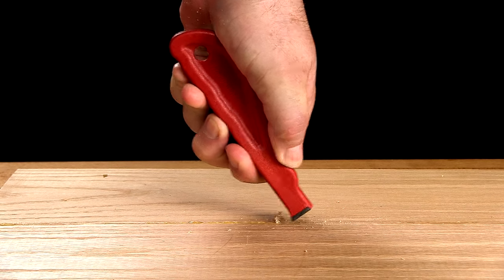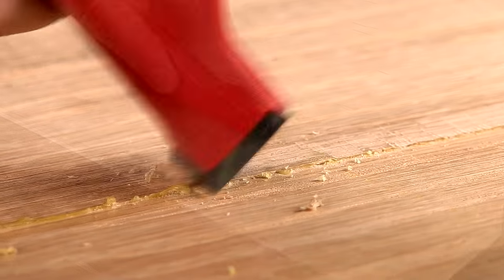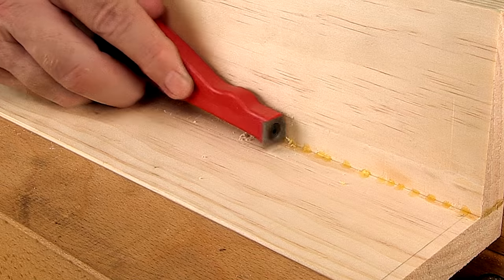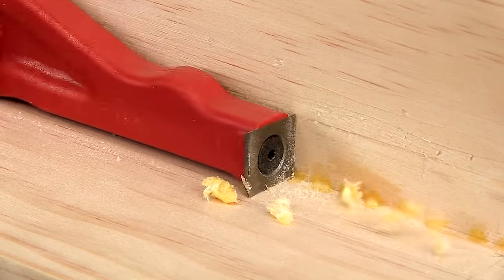Our mini scraper's rugged carbide blade will pop the toughest dry glue right off your work. And the mini scraper really shines removing glue from the inside corners of cabinet assemblies and other boxes.